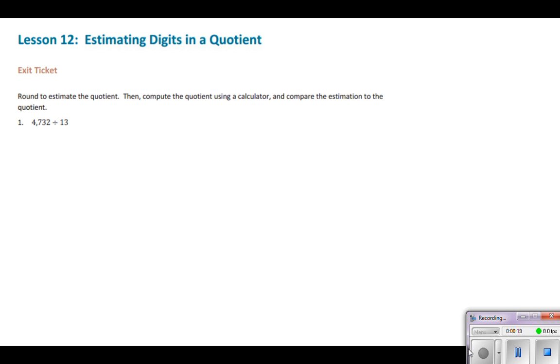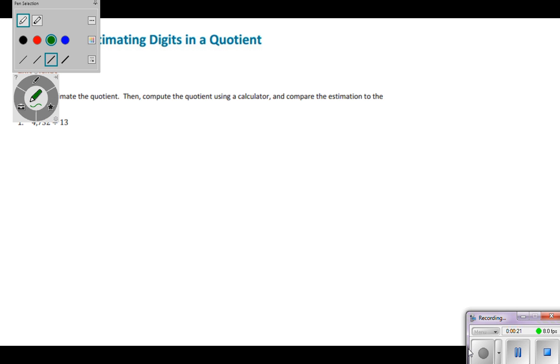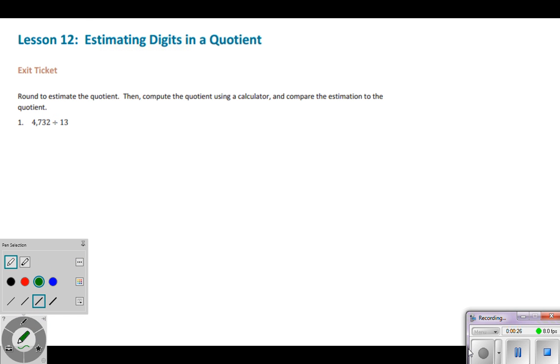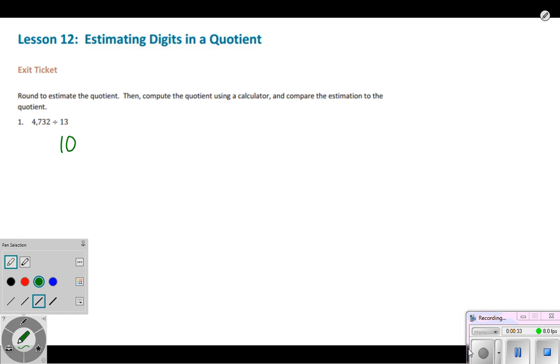So let's start out by estimating. When I first look at this problem, I want to look at the 13 and make it into something easy to use. So instead of dividing by 13, I want to divide by 10. So if I want to divide it by 10 because it's easy to do, I want to look at 4,732 and go, okay, what is that close to? And to make it as simple as possible, it's about 5,000. So when I look at 5,000 divided by 10,